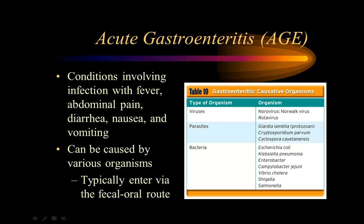Acute gastroenteritis is one of the most common things we're seeing right now — vomiting and diarrhea. The Norwalk virus on cruise ships is a classic example. Giardia is a parasite you can get from backpacking if you don't properly treat your water supply and drink from streams.